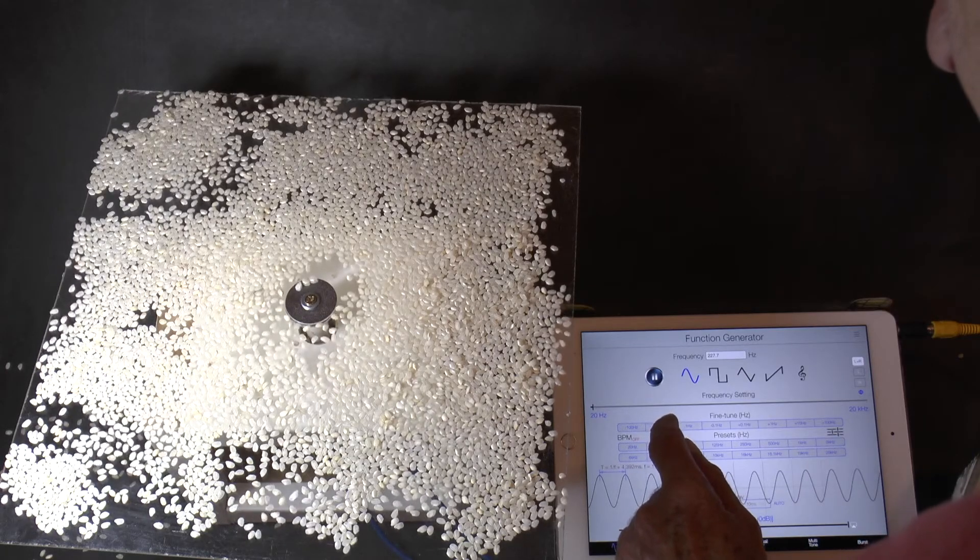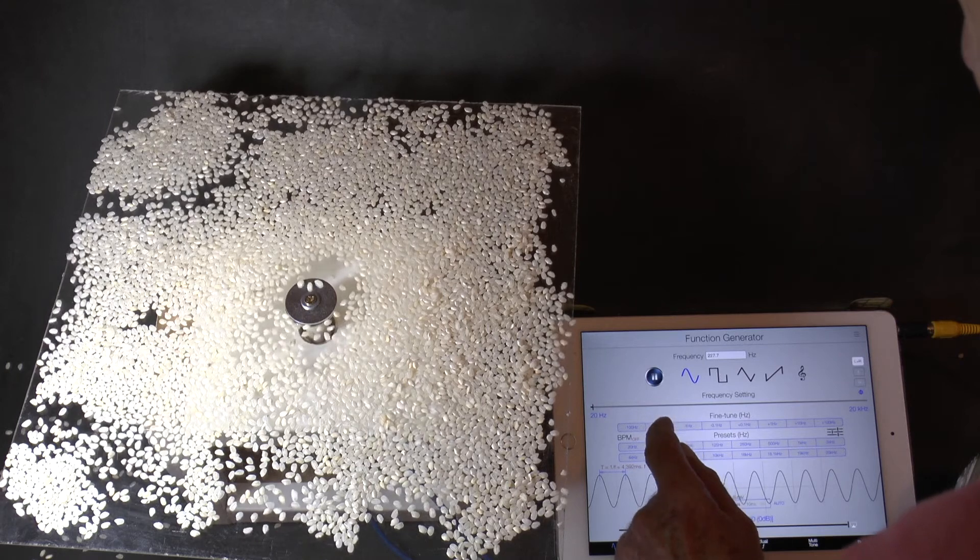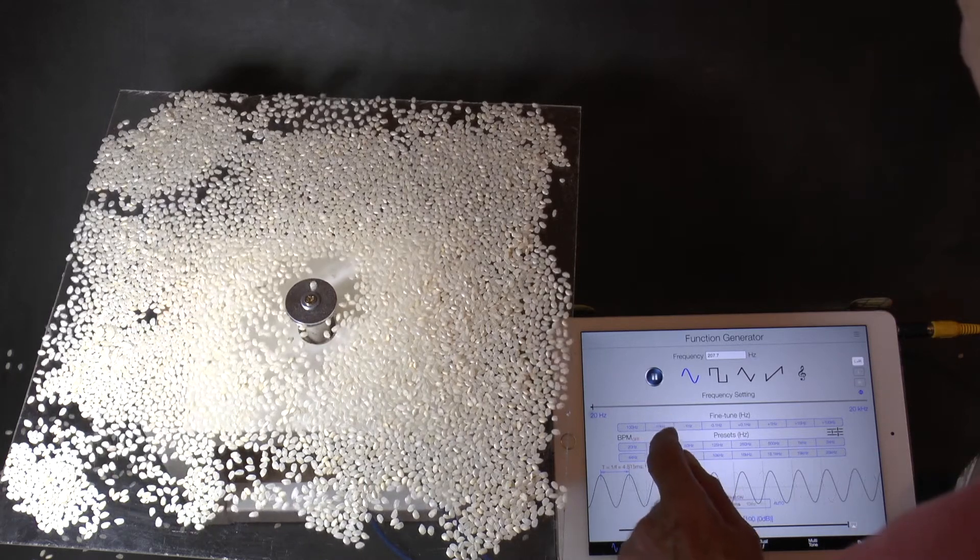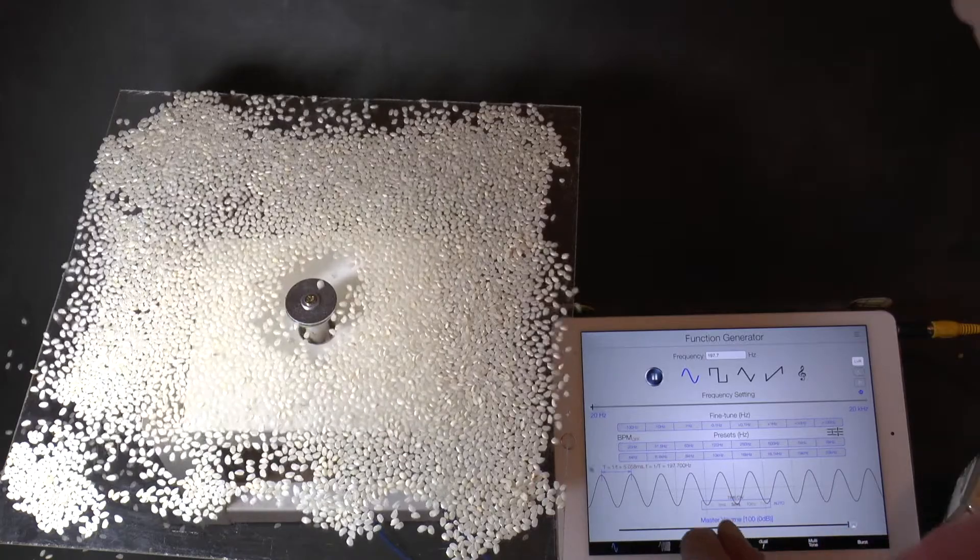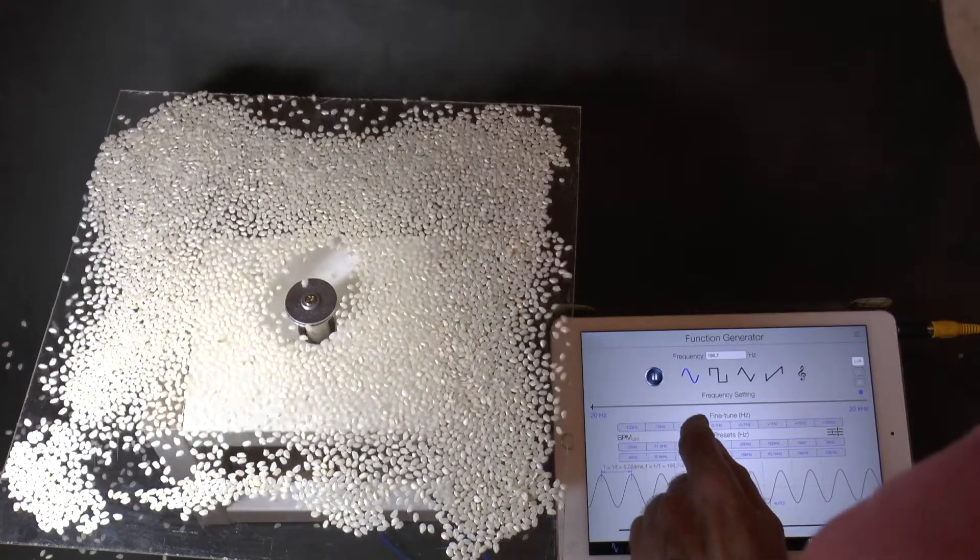Resonance in a flat plate is rather more complex. You've got a sheet of acrylic and on it sprinkled some rice. As we change the frequency, a pattern starts to emerge.